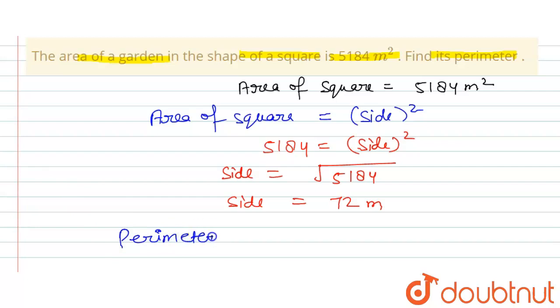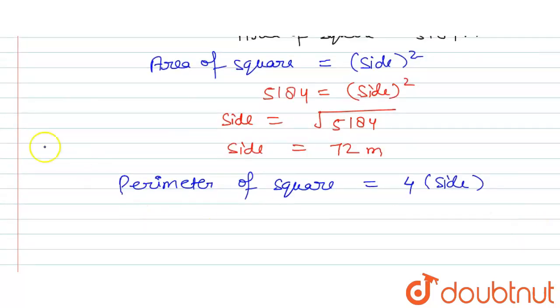Perimeter of square can be calculated by 4 times of side. So 4 times of side, that means here we will multiply side by 4, so 4 into 72.